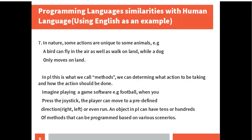The seventh similarity: in nature, some actions are unique to some animals. For example, a bird can fly in the air as well as walk on land, while a dog only moves on land. In PL, this is what we call methods — we can determine what action to be taken and how the action should be done. Imagine playing a game software, e.g., football: when you press the joystick the player can move in a predefined direction, right or left, or even run. An object in PL can have tens or hundreds of methods that can be programmed based on various scenarios.